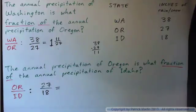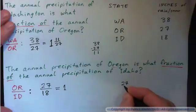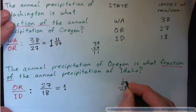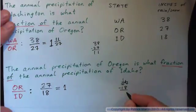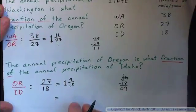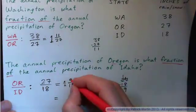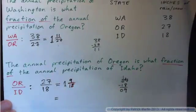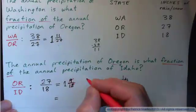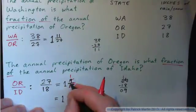Go ahead and turn it into a mixed number. 18 into 27 goes one time, and the remainder: 27 minus 18 — that becomes 17 minus 8 is 9, 1 minus 1 is 0 — so 1 and 9/18. Can we simplify that? 9 into 9 goes once and 9 into 18 goes twice, so that is 1 and 1/2.